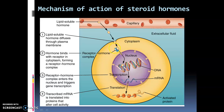The receptors for steroid hormones are located in the cytoplasm of the cell. Since the hormones can diffuse through the plasma membrane, they have intracellular receptors. When the hormone enters the cytoplasm, it binds with the cytoplasmic receptors and forms the hormone-receptor complex. These hormone-receptor complexes are transcription factors — molecules that are capable of binding with DNA.